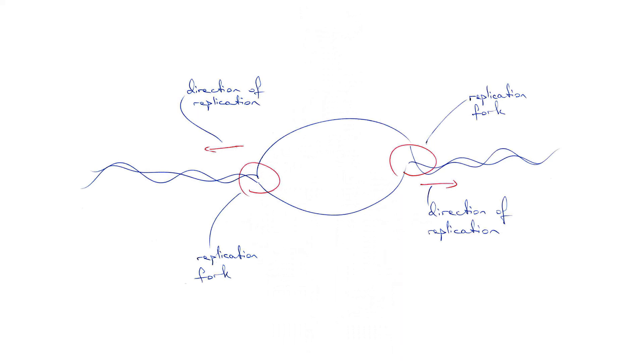Remember that the lagging strand underwent discontinuous replication as helicase opened up the DNA behind the RNA primer. With replication also proceeding in the other direction, the DNA polymerase 3 of the lagging strand is now working in the same direction as the second helicase.